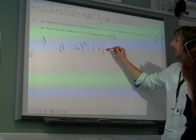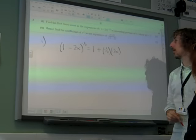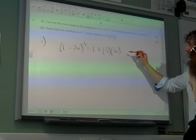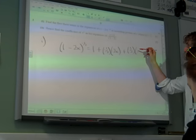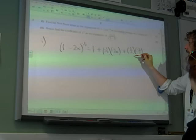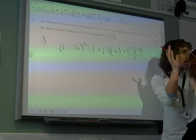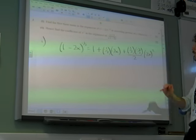which says 1 + nx. So, n is -1/2, and x is our -2x, plus n(n-1). If we take 1 away from -1/2, we get -3/2, over 2, times the x thing squared, times (-2x)².